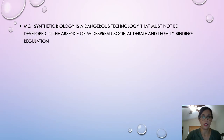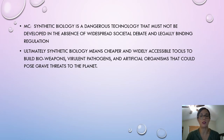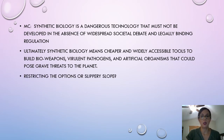Let's look at another type of flaw. This is from a Paper 1 passage arguing that synthetic biology is a dangerous technology that must not be developed. One paragraph says: 'Ultimately, synthetic biology means cheaper and widely accessible tools to build bioweapons, virulent pathogens, and artificial organisms that can pose grave threats to the planet.' Notice the keyword 'ultimately,' and it gives a chain reaction of terrible things. Because it's a series of negative consequences, this is slippery slope.